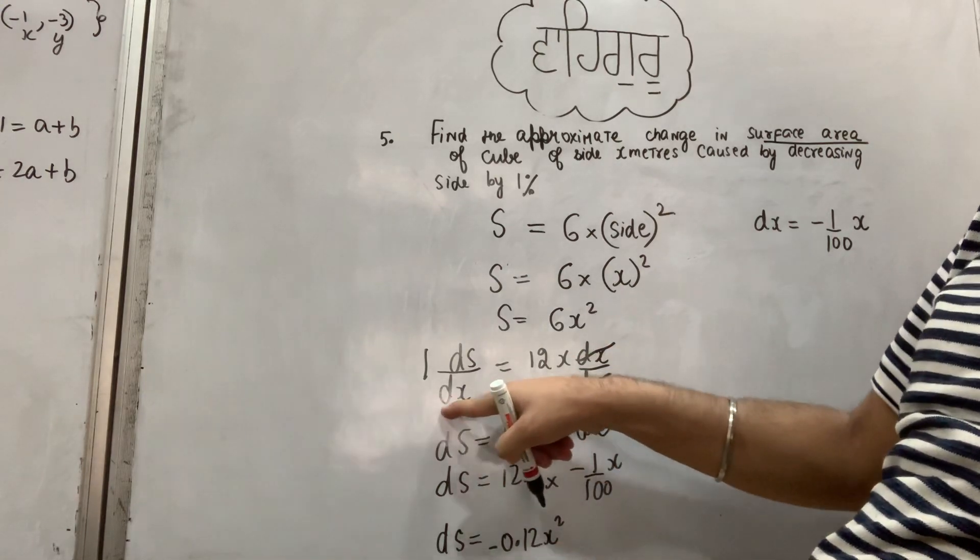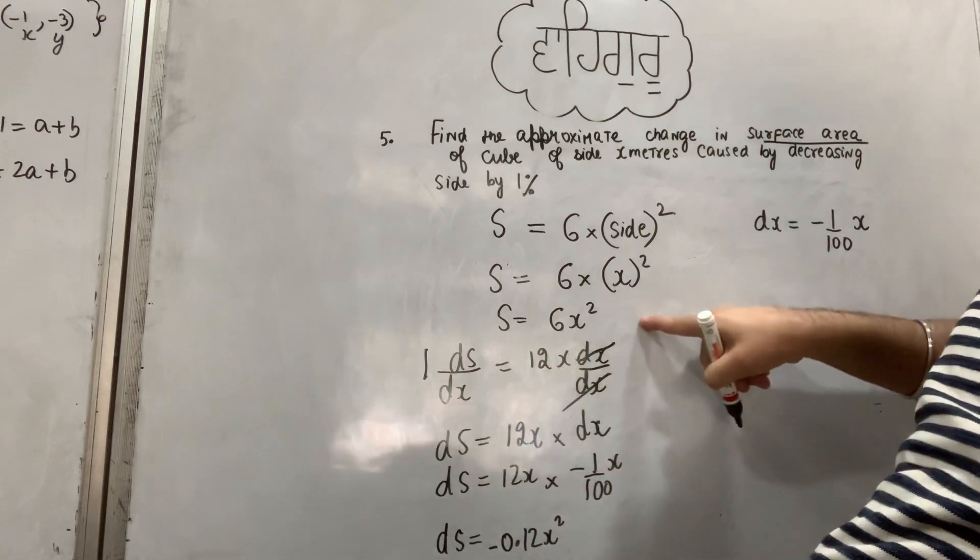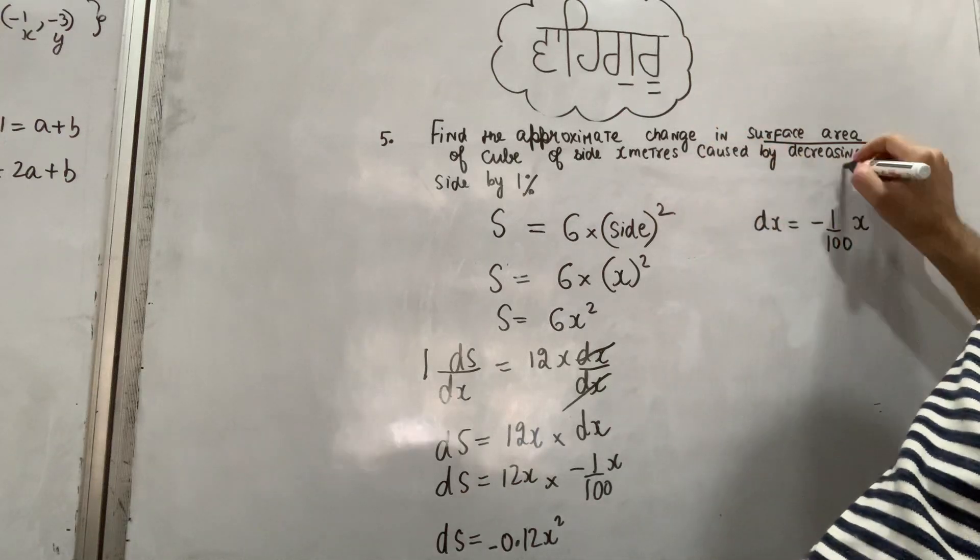In the next step, we have dx. So dS = 12x × dx. Okay, now I am going to tell you that the side is decreasing by one percent.